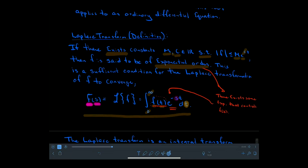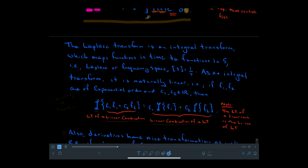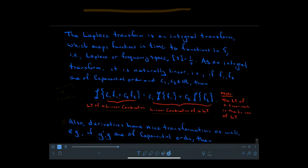That's the integral definition. We think of it as a coordinate transform from the t variable to the s variable, but what's important is how it gets used. Since it's an integral, it will naturally undo derivatives and break apart sums. So if we're working with linear equations, it will break over the linearity of the equation. We don't want to consult this integral definition every time, so we'll build a table of how common functions transform from t to s.